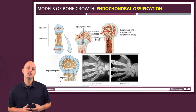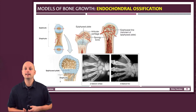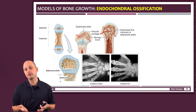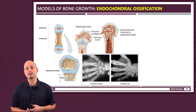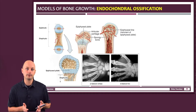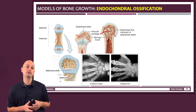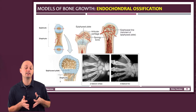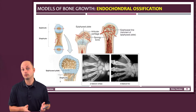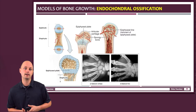Most of the growth on long bones actually arises from a hyaline cartilage template, and this process is known as endochondral ossification — it's literally the process of making bone from cartilage. So that's what we're looking at here on this slide.